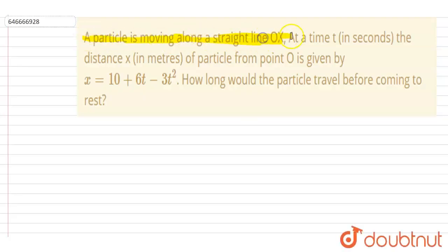A particle is moving along a straight line OX. At a time t, the distance of the particle from O is given by x = 10 + 6t - 3t². How long would it take the particle to travel before coming to rest?